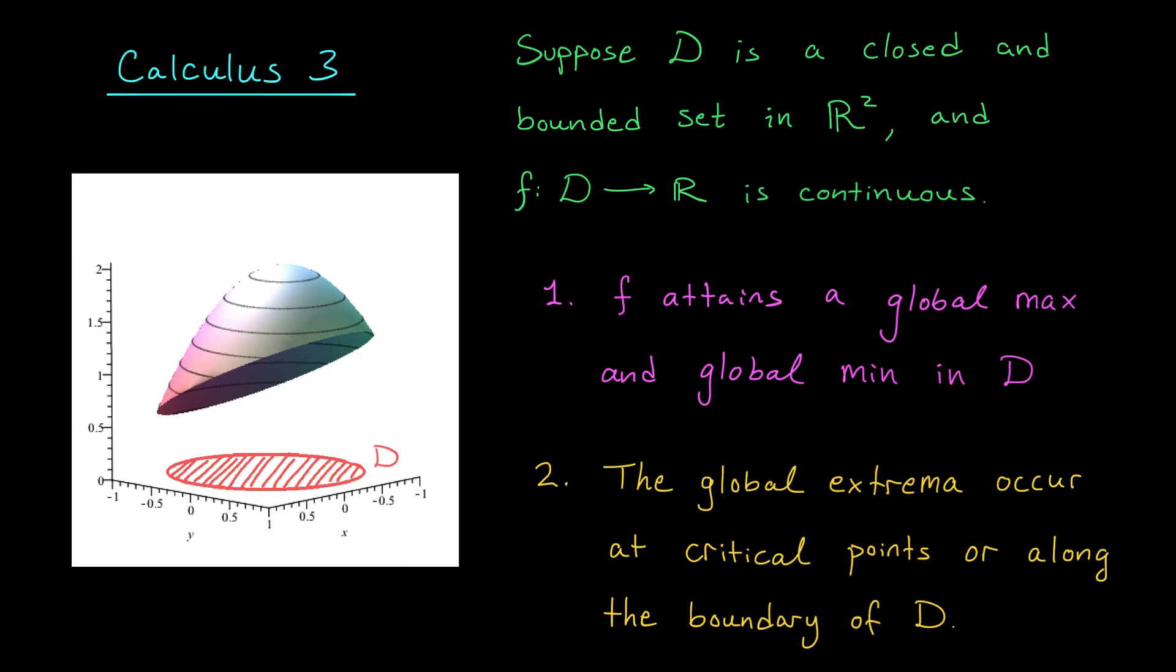Well what does this mean? The word bounded here just means that the region is contained in a finite portion of the plane. It doesn't go on and on forever in some direction. The word closed here just means that the region contains the points along the boundary. We're including the boundary in our region when we're looking for the global max and min.